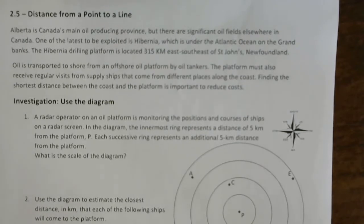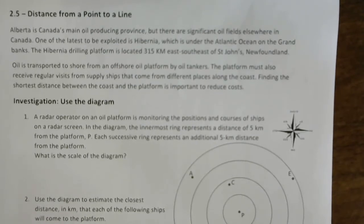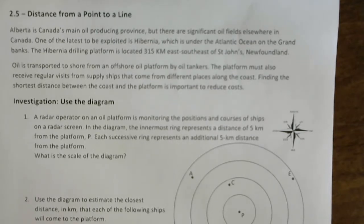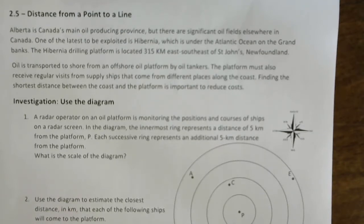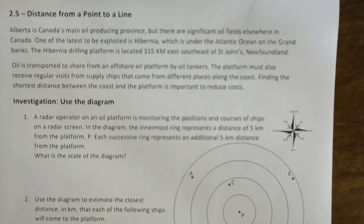Section 2.5: distance from a point to a line. This is another application of what you've already done. We have an investigation first: Alberta is Canada's main oil-producing province, but there are significant oil fields elsewhere. One of the latest is Hibernia, under the Atlantic Ocean on the Grand Banks. The Hibernia drilling platform is located 315 kilometers east-southeast of St. John's, Newfoundland. Oil is transported to shore from an offshore oil platform by oil tankers.